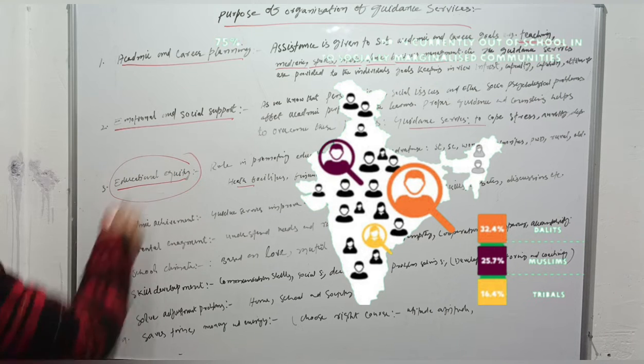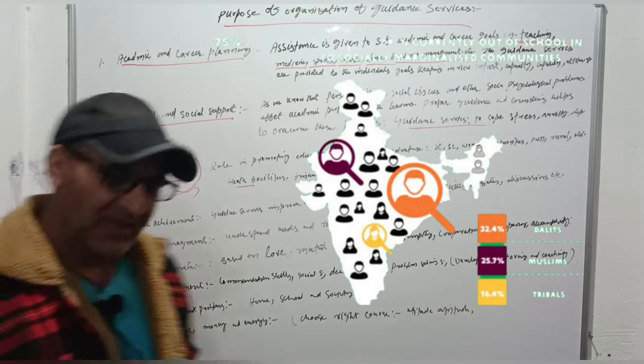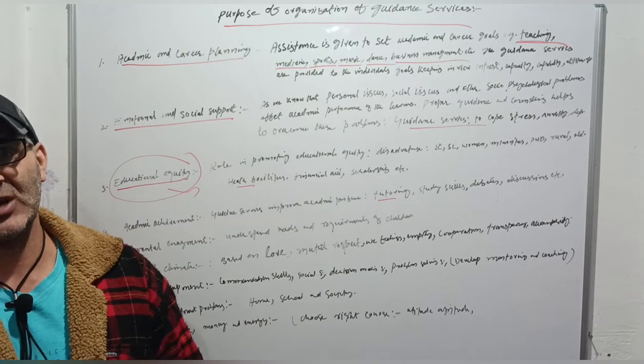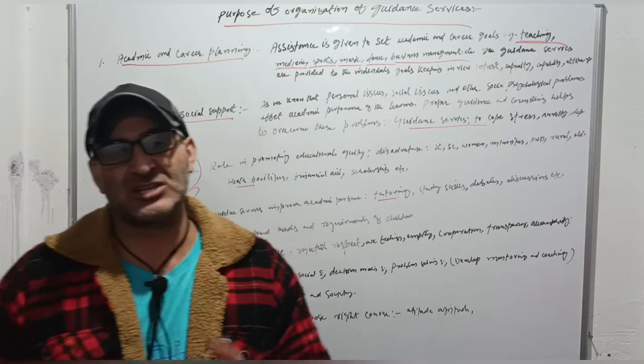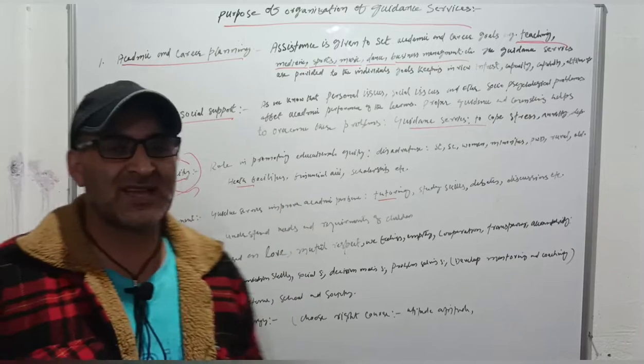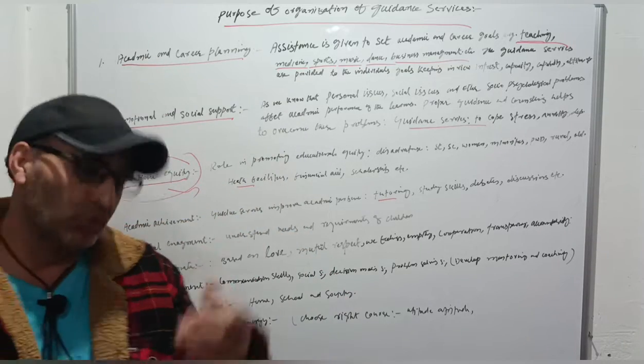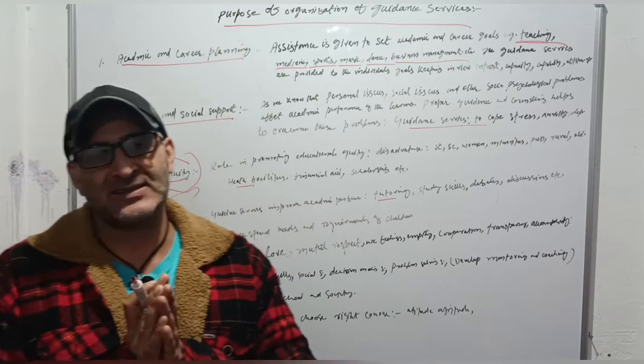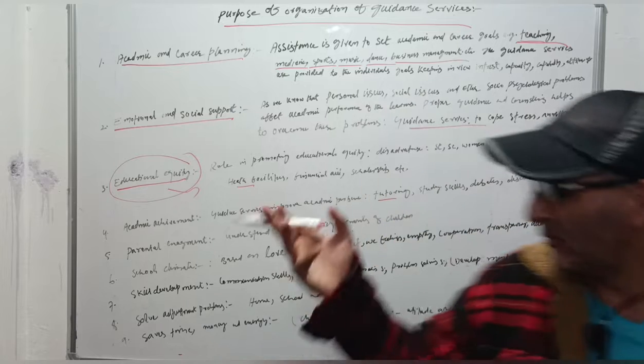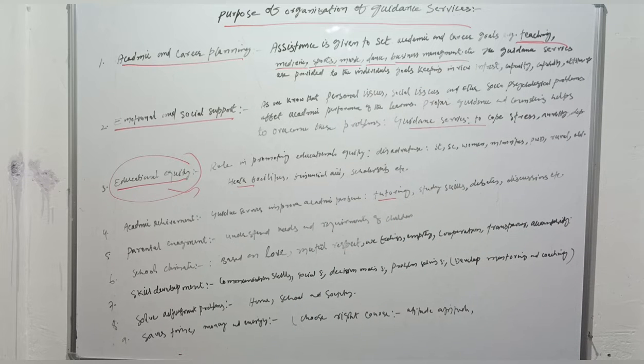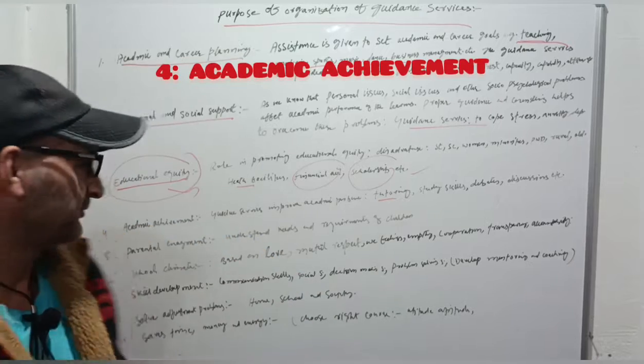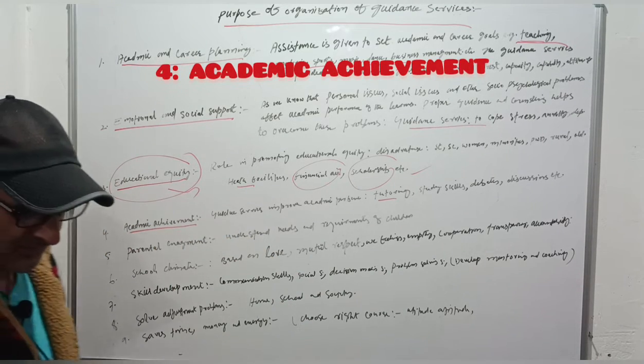These marginalized sections of society are educationally backward. That is why proper guidance services should be imparted so that social justice can be achieved for them, so they can also get opportunities to obtain education. By providing proper guidance services, we can help the marginalized sections in terms of providing them health facilities, financial aid, scholarships, etc.